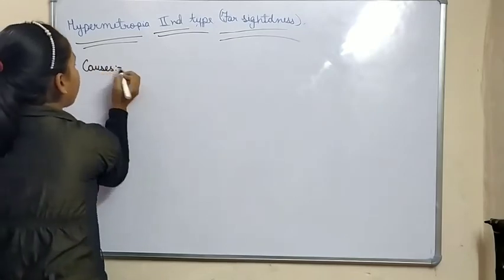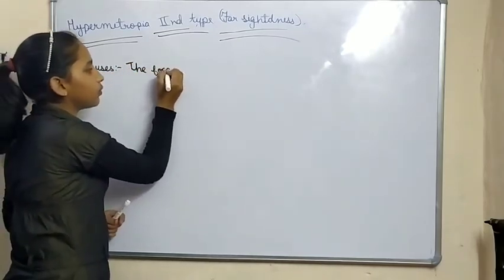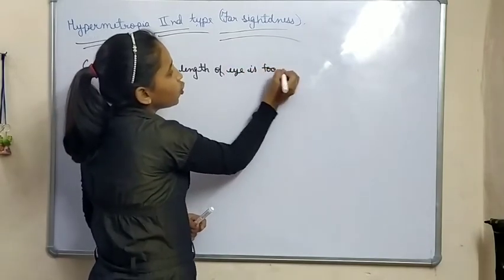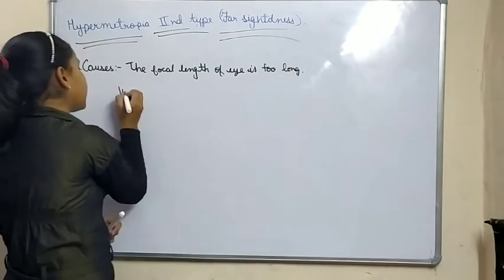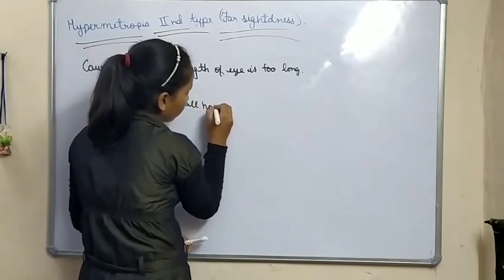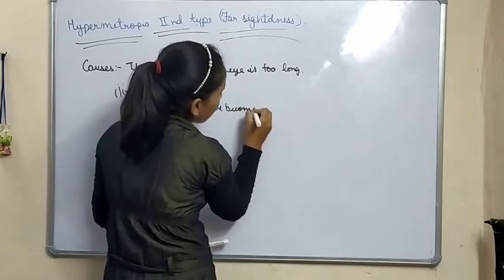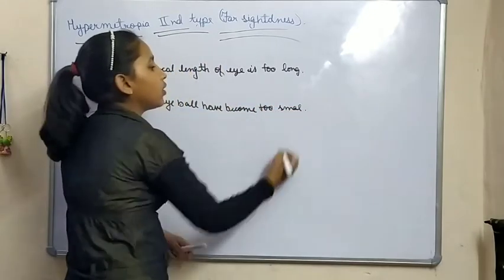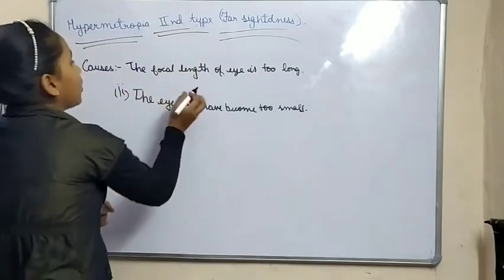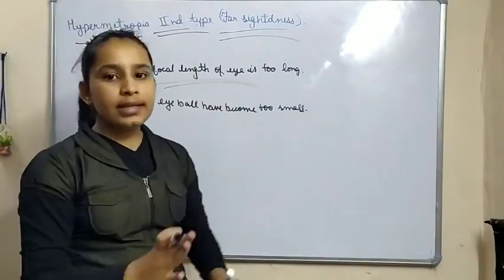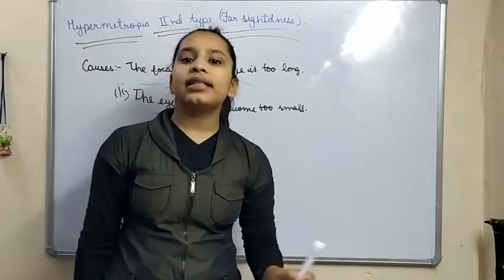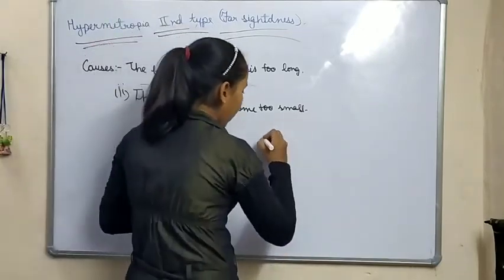The causes of hypermetropia are: first, the focal length of the eye is too long — the focal length is bigger than normal; and second, the eyeball has become too small. I am making a diagram for you to illustrate this. When parallel rays of light come in, they meet outside the eyeball, so the image of any object forms outside the eyeball and we see the image as blurry.